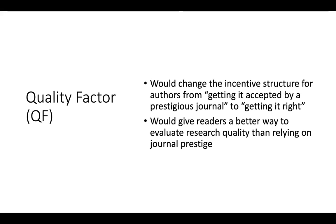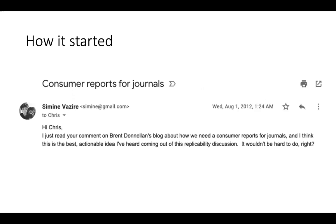This would give readers a better way to evaluate research quality than relying on journal prestige. It would take a lot of power away from for-profit journals, which we currently rely on to tell us what's good research — it's a black box we can't evaluate. We can take that power back and redefine what we mean by quality ourselves. I went back to my emails and found I first started communicating about rating the quality of journal articles around 2012, when I read a blog post by Brent Donilon where Chris Fraley commented that there should be a 'Consumer Reports for journals' — auditing the quality of their products.